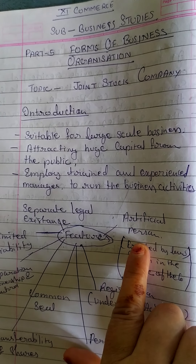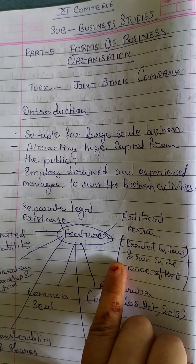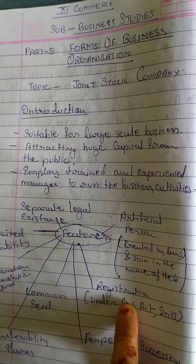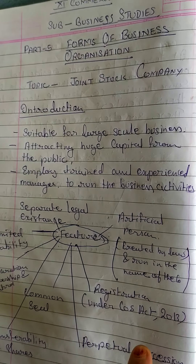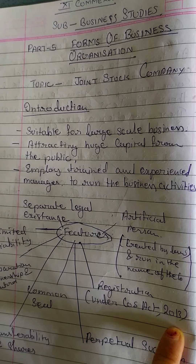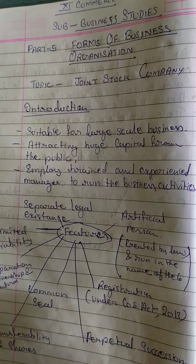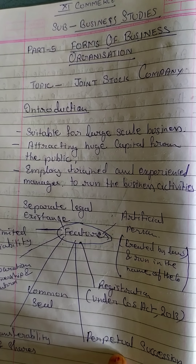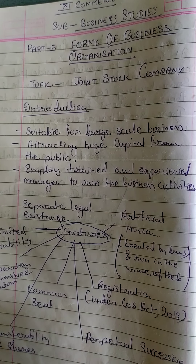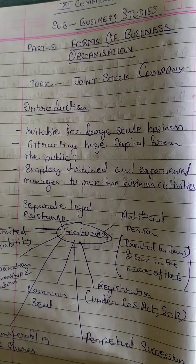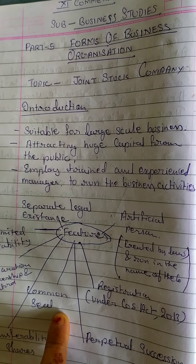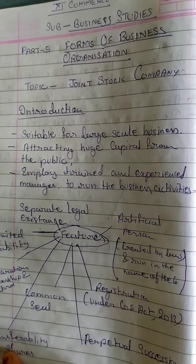It is treated as an artificial person because it is created by law and run in the name of the company. Registration is necessary under Companies Act 2013. Perpetual Succession means its identity or company identity is distinct from its members. So, its member's death and insolvency do not affect the continuity of its business. All the work is done under the common seal because it is treated as an artificial person.